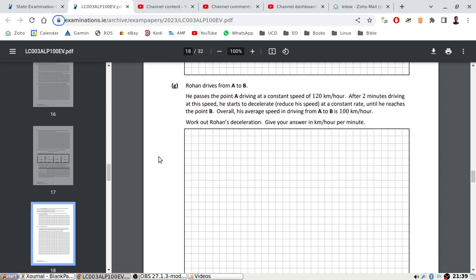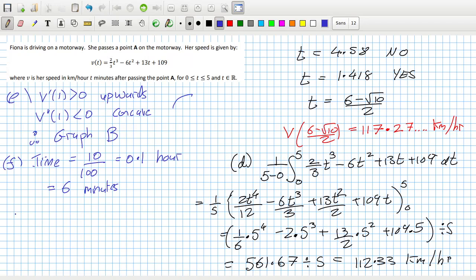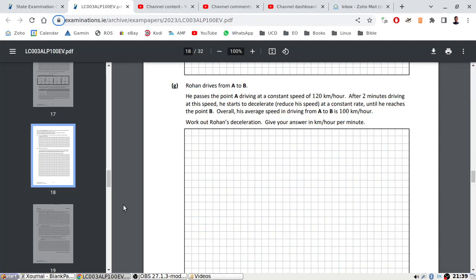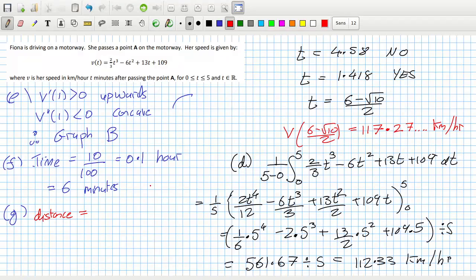Part G: Rowan drives from A to B. He passes point A driving at a constant speed of 120. After 2 minutes driving at this speed, he starts to decelerate at a constant brake until he reaches point B. Overall, his average speed is 100. Work out his deceleration. That's a very applied maths question. Let's try and sketch this out. He drives 2 minutes at 120. Let's take that out of the equation and figure out how far he got in that time. His distance is speed multiplied by time. That's 120 times 2 over 60, which is 4 kilometers. So that means he has 6 kilometers left.